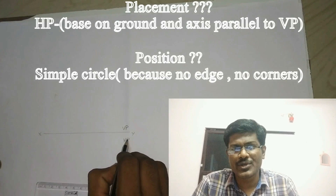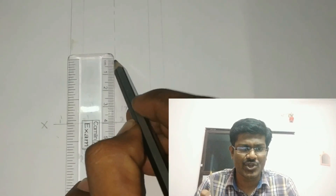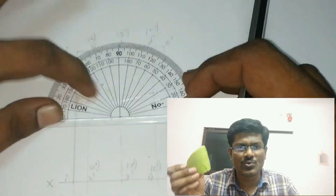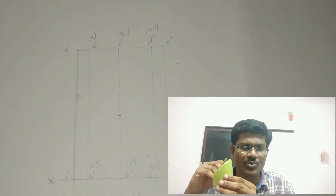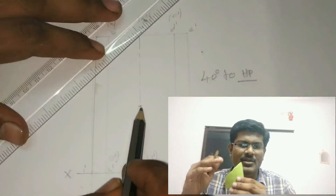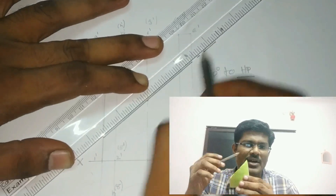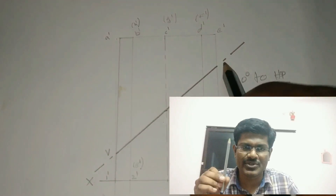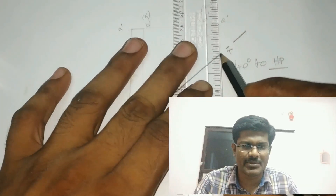Before going to start the first step we need to know the pencil usage for this particular unit. Because here we are going to remove some parts of the solid. The removed and unremoved portions can be identified after locating the cutting plane. Before locating the cutting plane we can't identify the removed and unremoved sections, so that's why we have to use H-pencil. We have to darken the unremoved portions with the help of H-pencil.